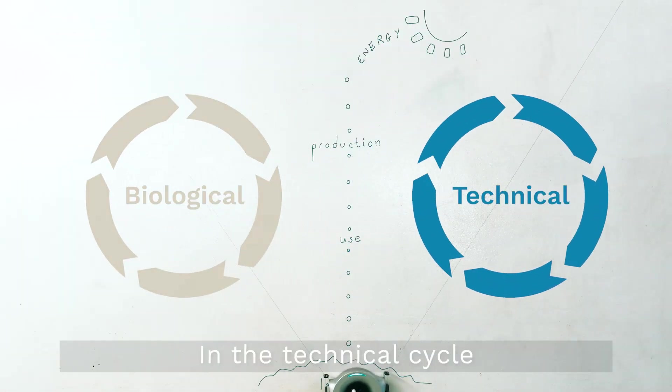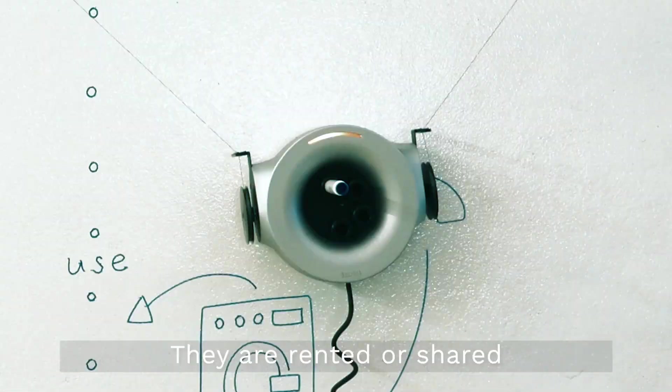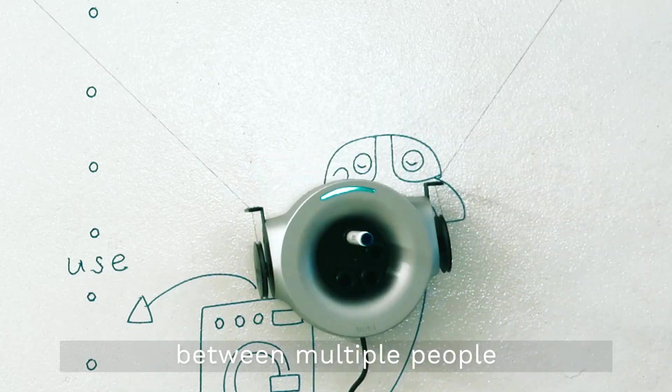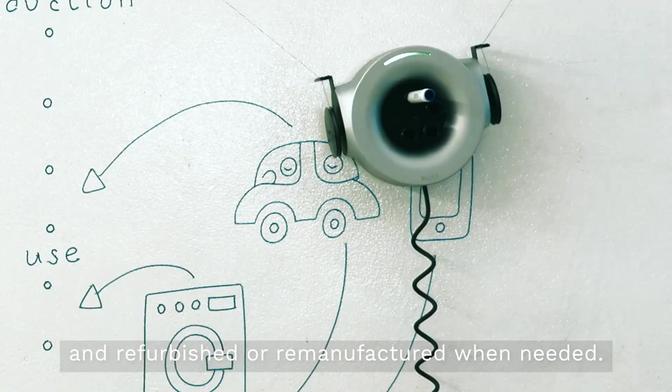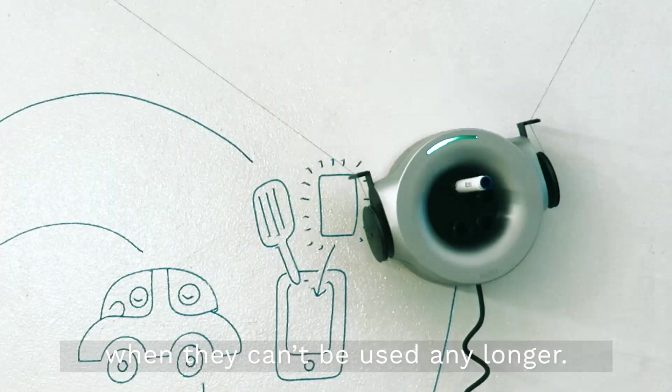In the technical cycle, products are designed to be maintained at high quality. They're rented or shared between multiple people and refurbished or remanufactured when needed. They can also be recycled for their materials when they can't be used any longer.